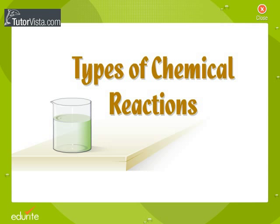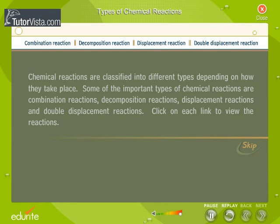Types of Chemical Reactions. Chemical reactions are classified into different types depending on how they take place. Some of the important types of chemical reactions are combination reactions, decomposition reactions, displacement reactions, and double displacement reactions.